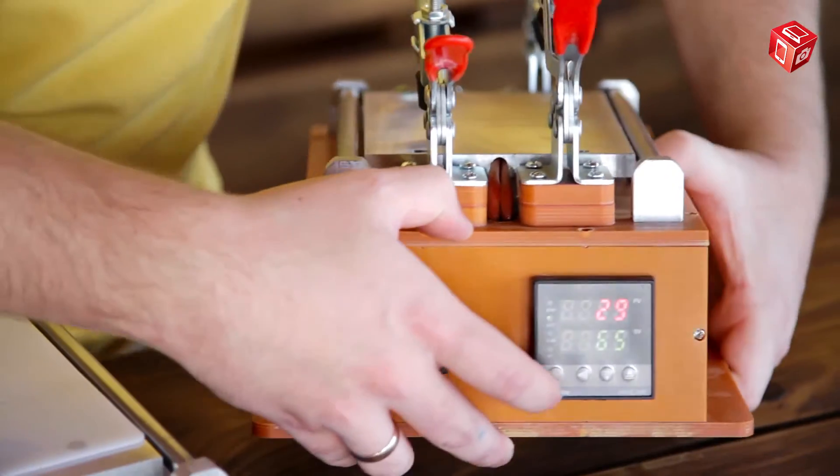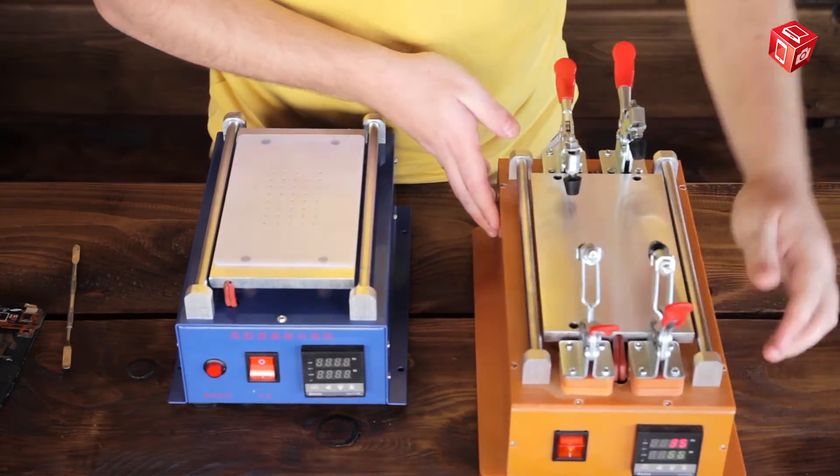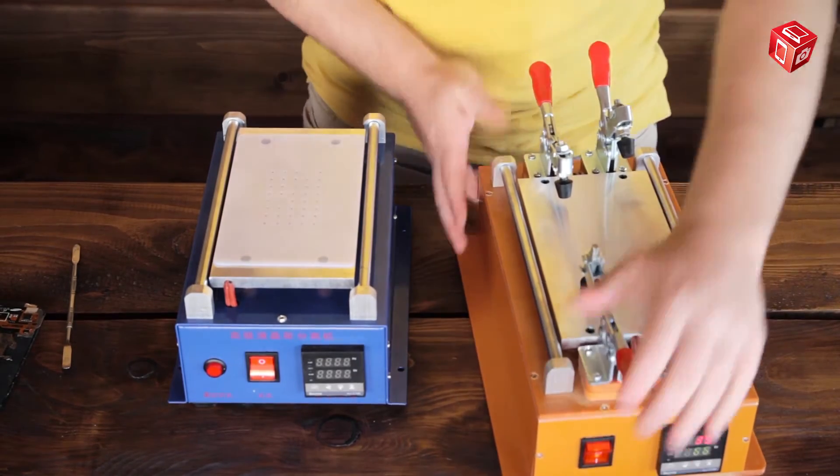A socket for a power cable is located on the back panel of the device. There are also four clamps on the top platform that fix a module.